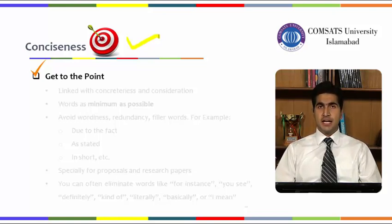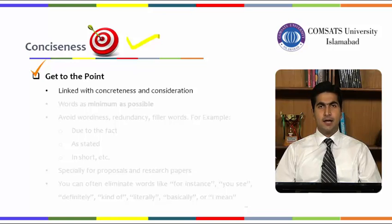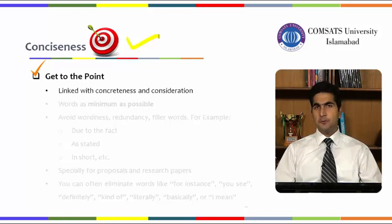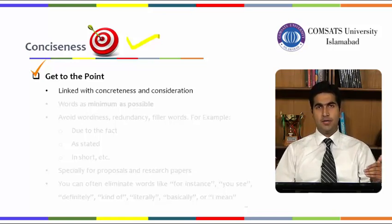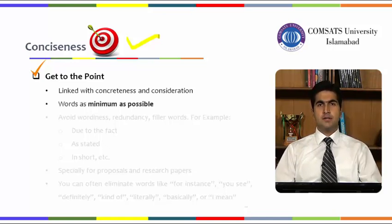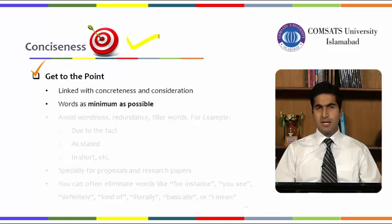Now the first C has been completed and we move towards the next C of communication — that is conciseness. What do we mean by conciseness? Making things very brief and to the point — you basically get to the point and hit things in the bullseye, as clearly evident from the diagram. Conciseness is linked with concreteness and consideration. Conciseness means providing specific information — the quality of concreteness — and keeping in view the nature of your audience, also developing consideration.